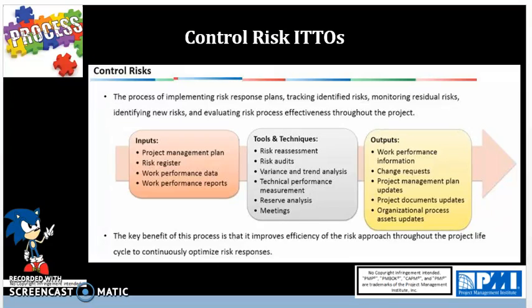Outputs from this process include work performance information, or WPI. As with other controlling processes, the hallmark data flow is that work performance data comes in and is analyzed in context to provide information relevant to the project. This WPI is then sent to monitor and control project work to create a work performance report. We also expect change requests, as we might have to submit recommended corrective actions or preventative actions while analyzing and controlling risks.